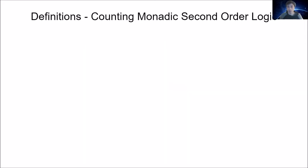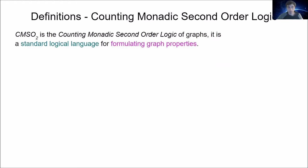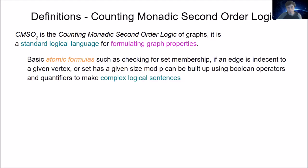The second definition is counting monadic second order logic. CMSO₂ is the counting monadic second order logic of graphs — a standard logical language for formulating graph properties. It has basic atomic formulas such as checking set membership, whether an edge is incident to a given vertex, or whether a set has a given size modulo p. These basic atomic formulas can be combined using Boolean operators and quantifiers to make complex logical statements.